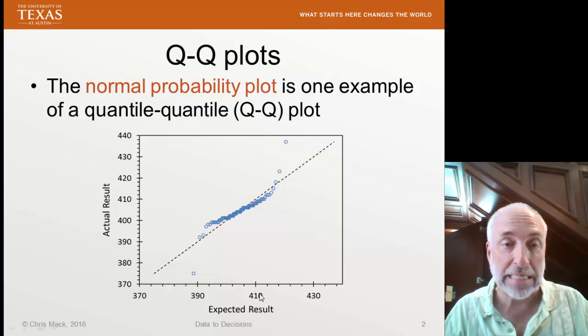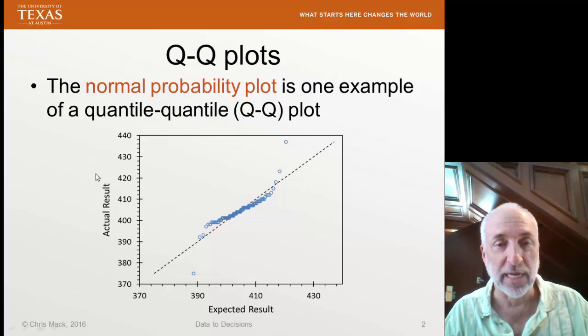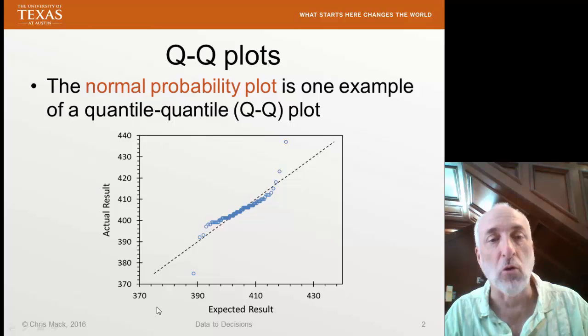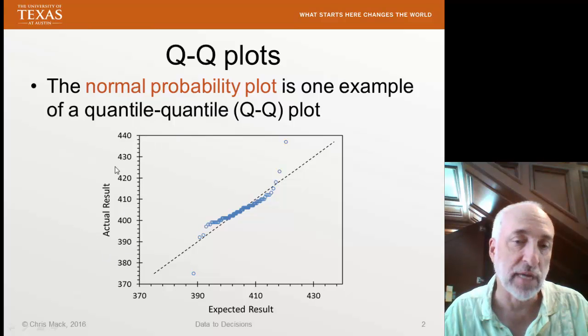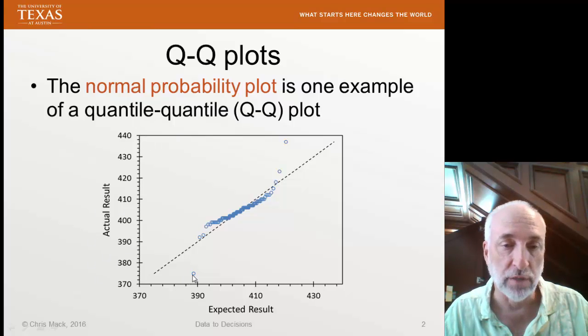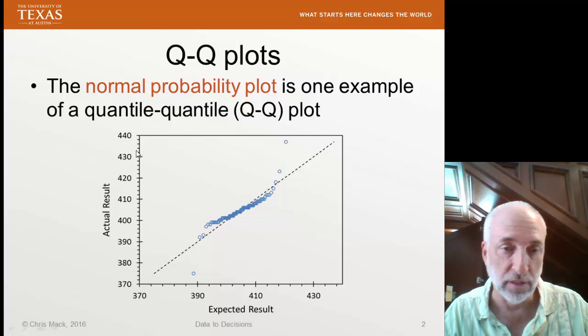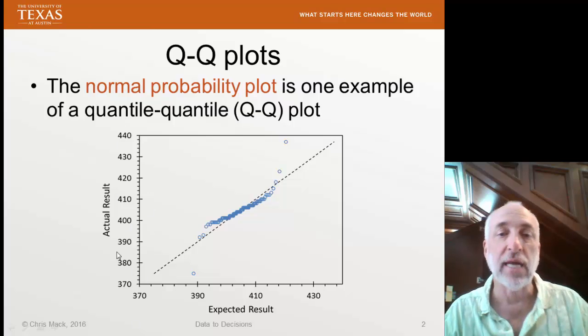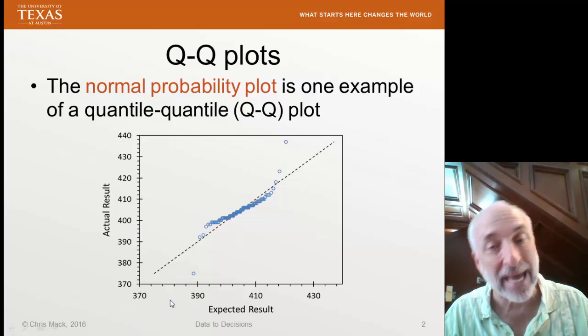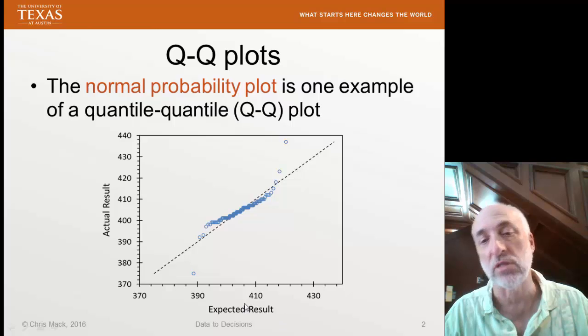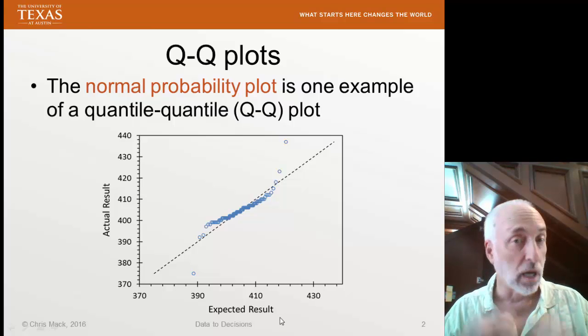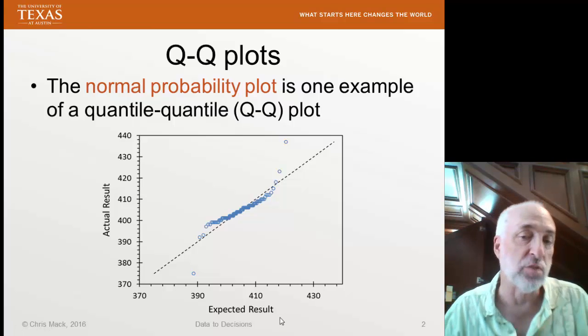What we are going to plot is the actual results from my experiment. Here I have an experiment, and all of the values that came out of that experiment were from 374 up to 435. Those are the numbers that came out. And then I'm going to calculate an expected result in that experiment, assuming a certain probability distribution.